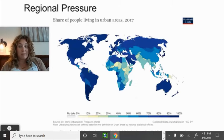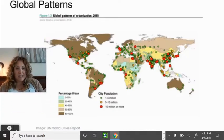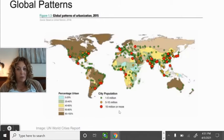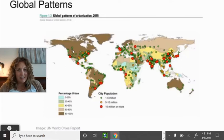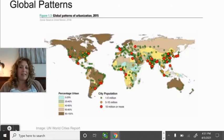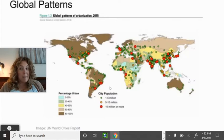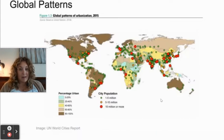Global patterns of urbanization: this map shows two data sets — the color indicates percentage urban, and dots show city populations. You can see a direct correlation between the number of people living in urban areas and how big those cities are. There are also interesting spatial patterns — large cities tend to develop along coasts historically, because that's where access to trade and transportation was.